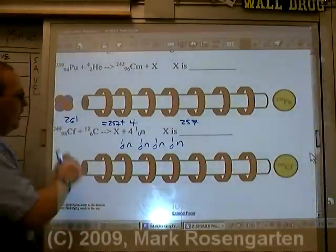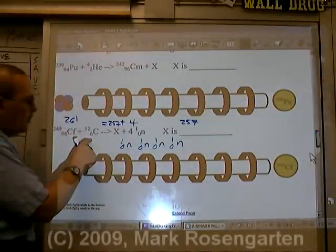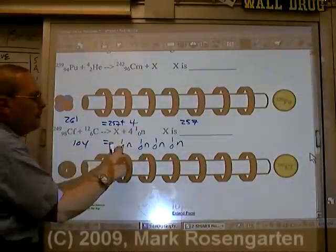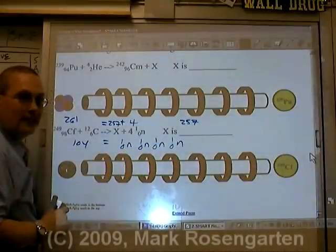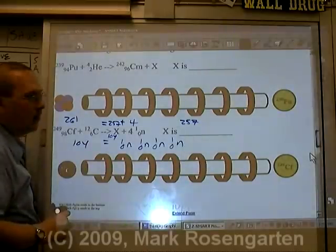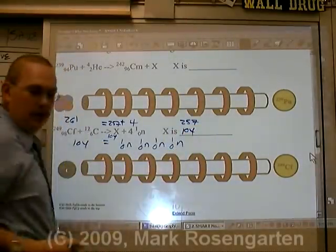All right, now on the other side we've got 98 plus 6 which is 104, equals four times 0 is still 0 any way you slice it. So 104 is the atomic number, and all we got to do is look on the periodic table and find out what element 104 is.